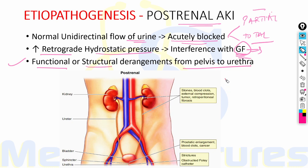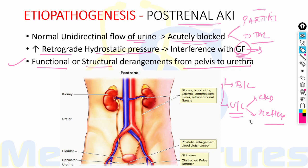For AKI to occur in healthy individuals with two healthy kidneys, either bilateral obstruction or unilateral obstruction in patients with CKD must be present. Sometimes reflex vasospasm of the contralateral functional kidney also leads to bilateral obstruction. Causes in the pelvis include stones, blood clots, external compression, and tumor by retroperitoneal fibrosis. Bladder outlet obstruction can be caused by prostatic enlargement, blood clots, or cancer. Urethral obstruction can result from strictures and obstructed Foley catheter — all of which should be identified as soon as possible to avoid back-pressure changes.